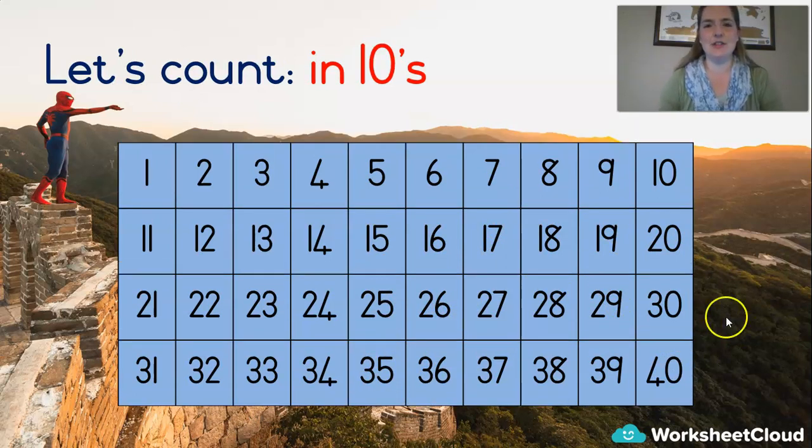And lastly, in 10's, which is so nice and easy, we just start at 10 and go zhoops down the side. Can you do it by yourself? Let me hear. 10, 20, 30, 40. Well done.